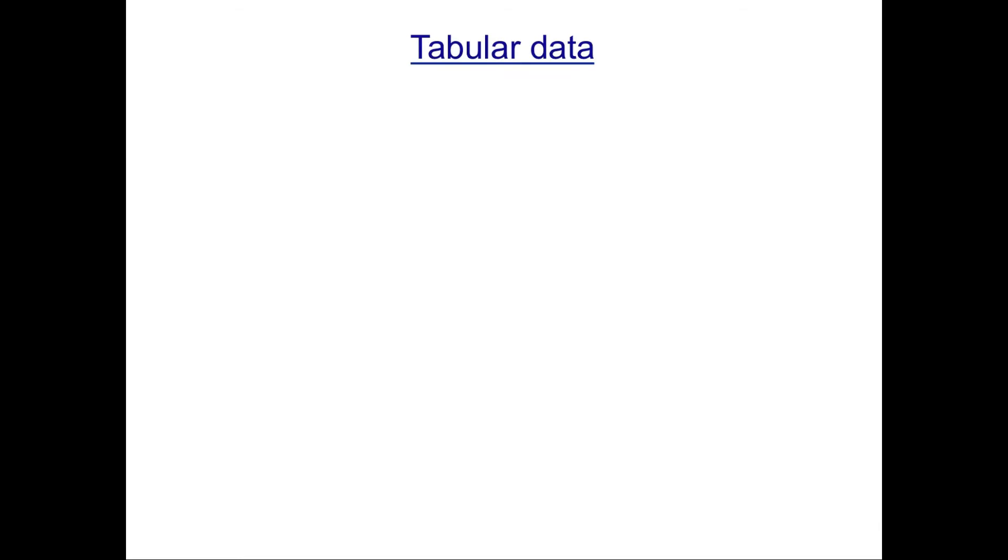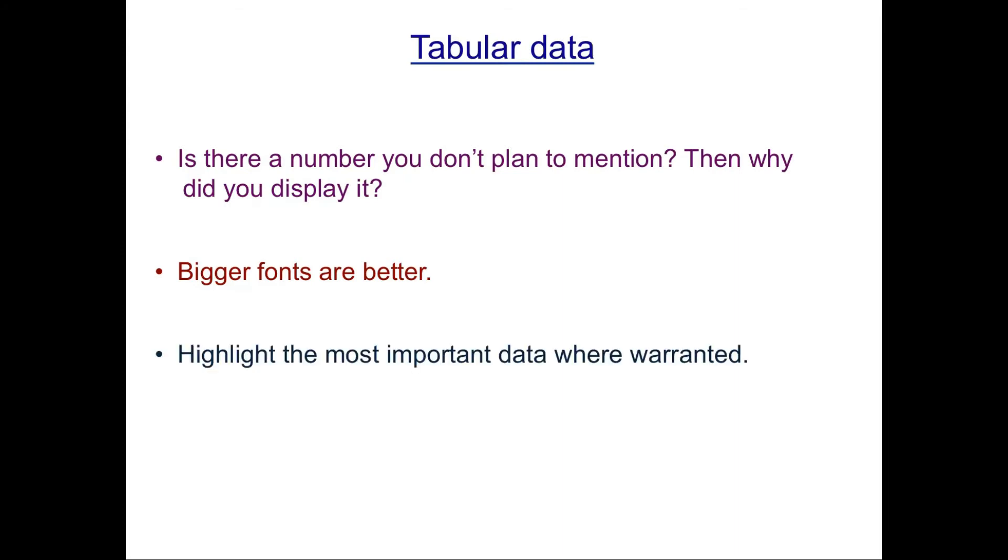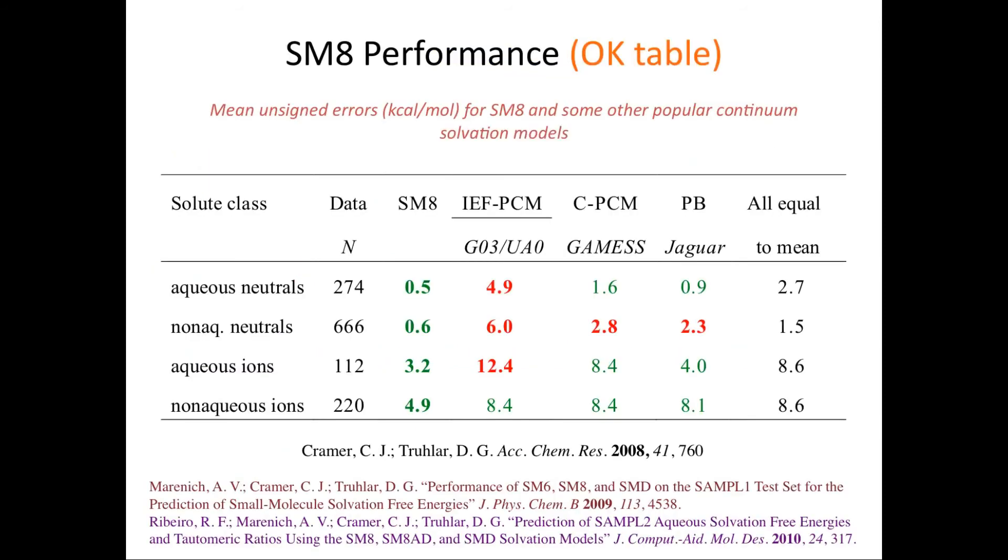Tables. Certainly lots of presentations that include data have tabular data. Here's my attitude about tabular data. Is there a number in your table that you don't plan to mention? Well then why do you need to display it? So tune—don't just cut a table out of some other place like a research paper or what have you. Tune the tables in your presentation to match the point you're trying to get across. Reduce the data if that's effective. Again, bigger fonts are better. You want people to be able to see it. And use the opportunity of a presentation to highlight important data. Again, draw attention where you want it. You can do that with a laser pointer, of course, but you can also do it with the graphics within your presentation software. And I like keeping borders clean and simple. That's just a general rule for slides, I think.